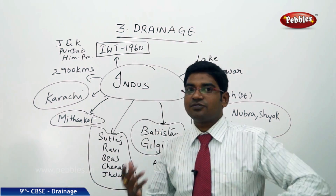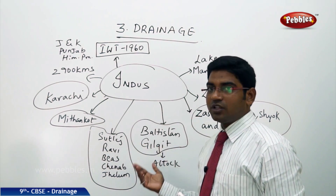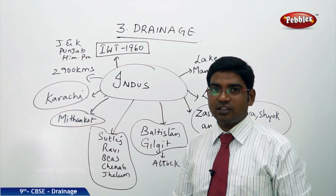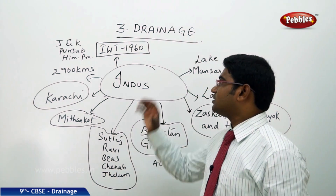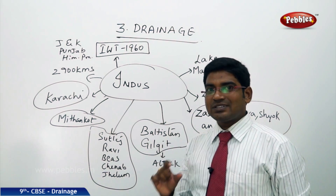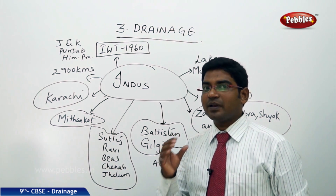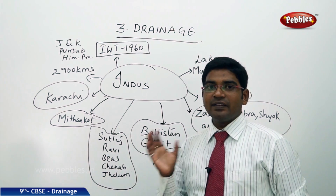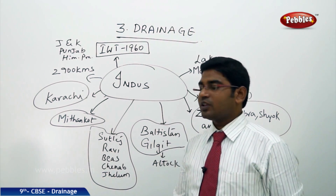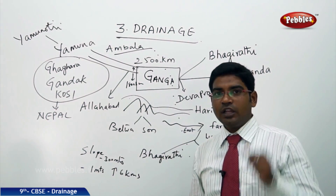In this journey it makes five major tributaries: Sutlej, Ravi, Beas, Jhelum, and Chenab. It also led India and Pakistan to sign the Indus Water Treaty of 1960, which states that only 20% of the Indus water can be utilized by India and the remaining 80% for Pakistan's needs. That covers the Indus river system.